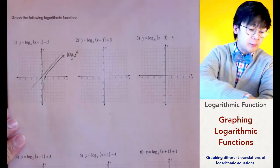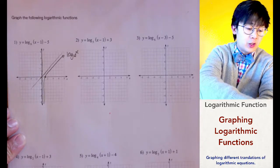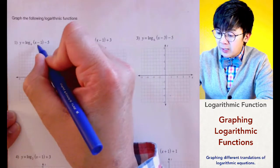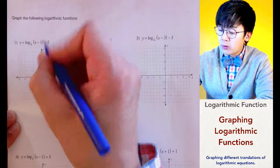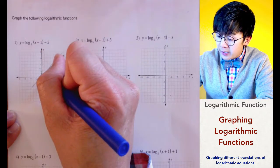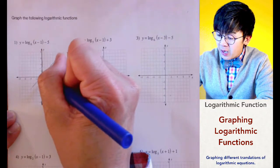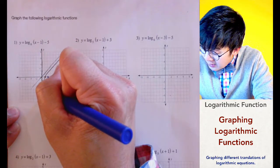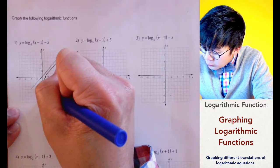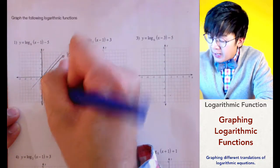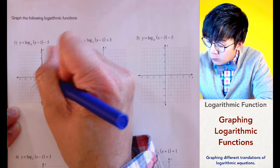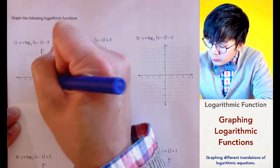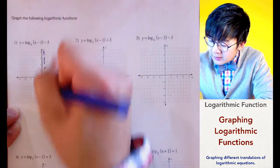Now we can proceed with the translation of our function. Since we have x minus 1, it means we're going to move 1 unit to the right, and then 5 units going down. So we have a point of inflection at (2, -5). At that point, we know that the vertical asymptote will move 1 unit to the right, giving us our new vertical asymptote.